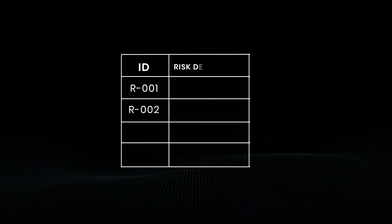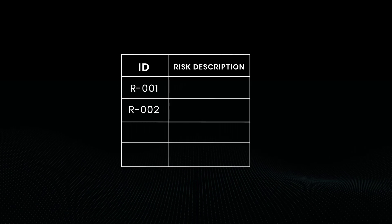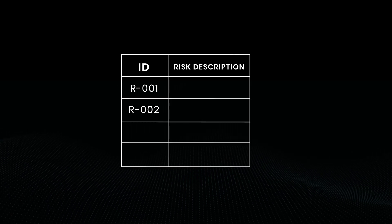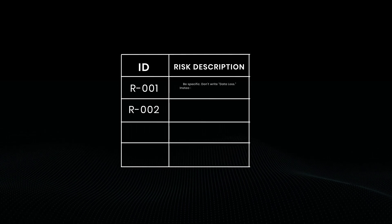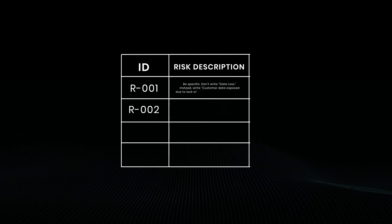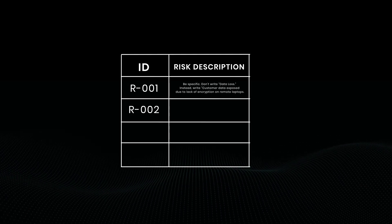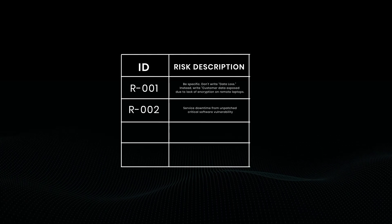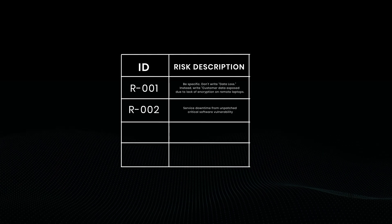Second column is risk description. Be specific. Don't write 'data loss' — instead write something like: 'Customer data exposed due to lack of encryption on remote laptops.' That level of clarity matters.